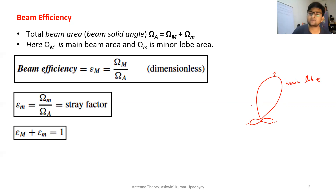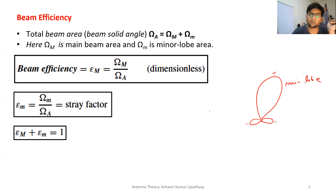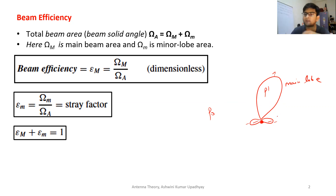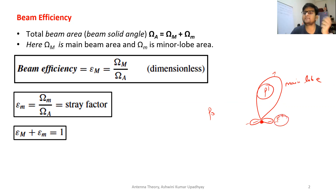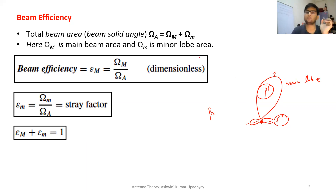Beam efficiency refers to that property of an antenna in which we see how much power, out of total power P_O radiated from the antenna, is concentrated in the main lobe. If the total power radiated in the main lobe is P' and total power radiated in the minor lobes is P'', then for a good antenna you want P' to be maximum and P'' to be minimum. This quantity is represented by beam efficiency, in which we divide the total beam area into two parts.